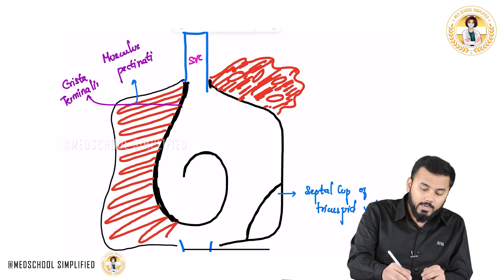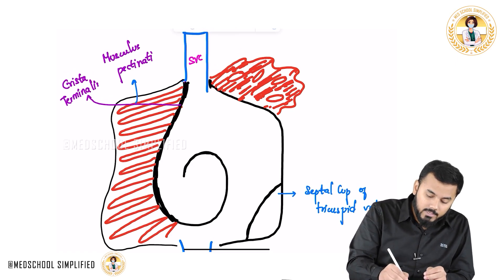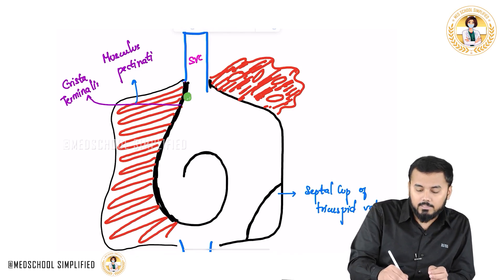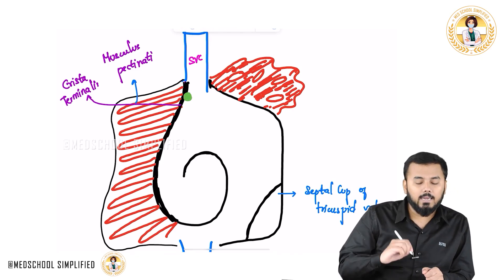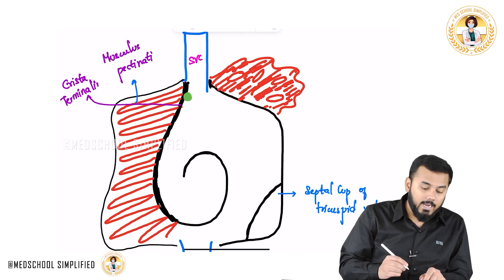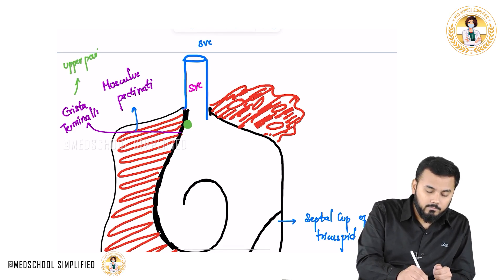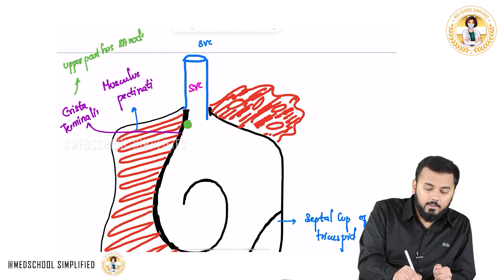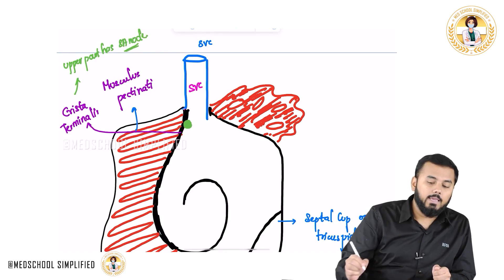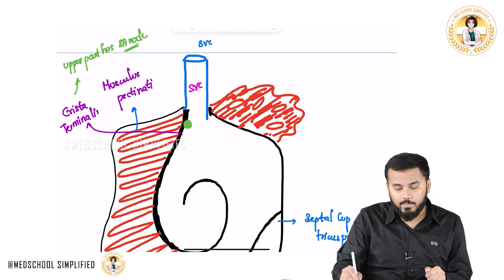If you look at the upper part of the Crista Terminalis, this upper part is having a node and this node is called as your SA node. So the upper part of Crista Terminalis has the SA node.